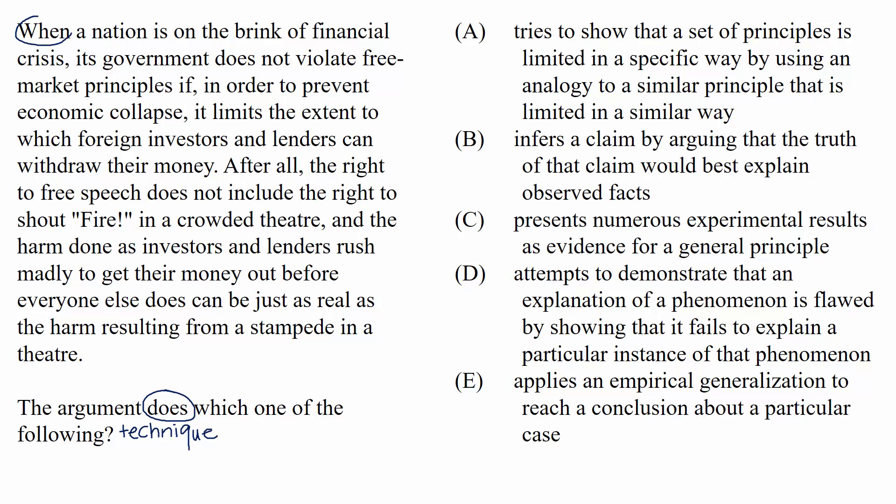When a nation is on the brink of financial crisis, its government does not violate free market principles if, in order to prevent economic collapse, it limits the extent to which foreign investors and lenders can withdraw their money. After all, the right to free speech does not include the right to shout fire in a crowded theater. And the harm done as investors and lenders rush madly to get their money out before everyone else does can be just as real as the harm resulting from a stampede in a theater.